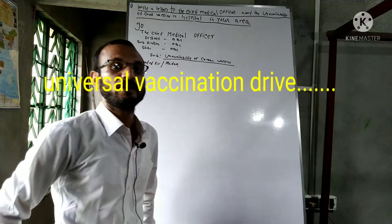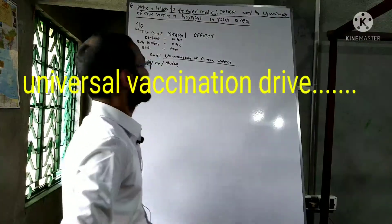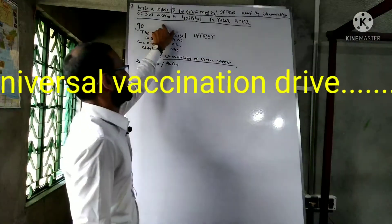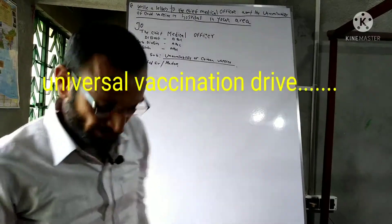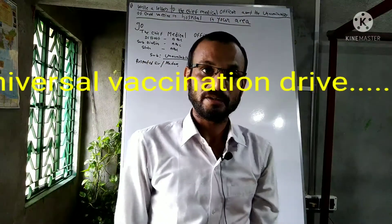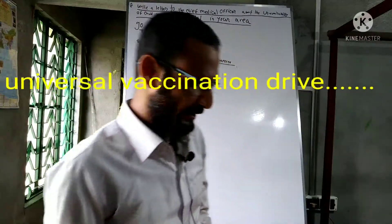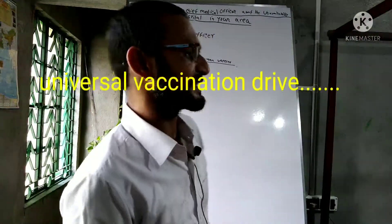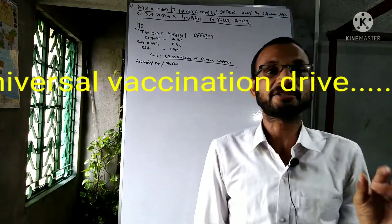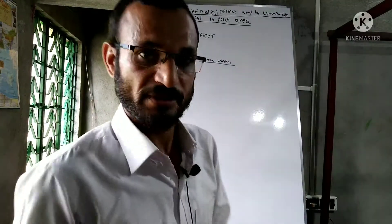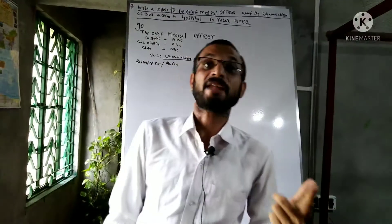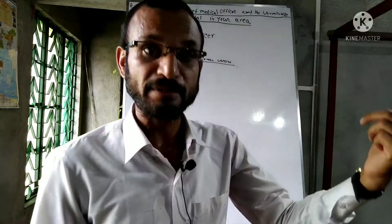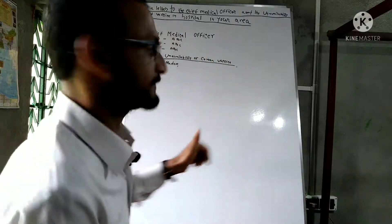My name is Nikhil. Today I am going to tell you how to write a letter. The subject is: write a letter to the chief medical officer about the unavailability of COVID vaccine in the hospital in your area. Right now, vaccine is not available in many hospitals in the country. In some areas, vaccines are not available properly, so we have to write a letter to the concerned department about this problem.